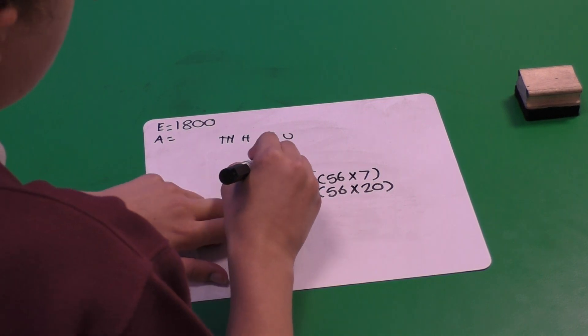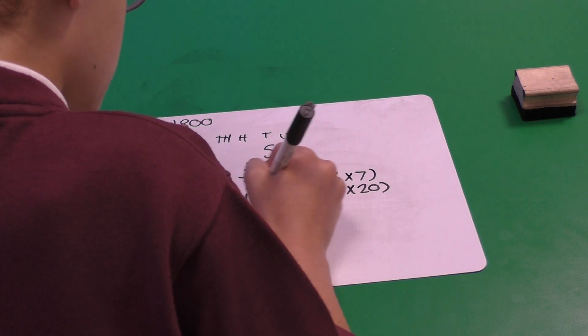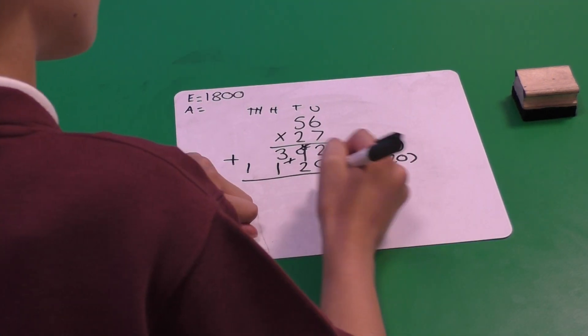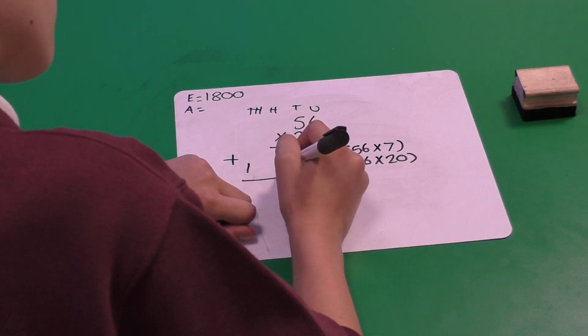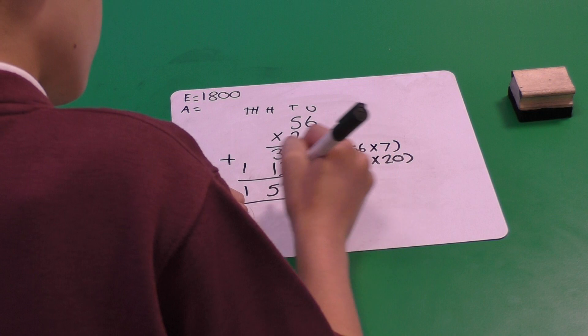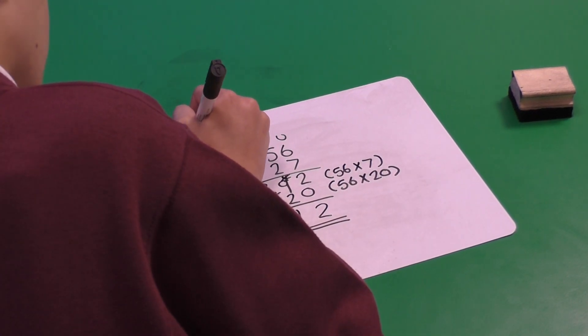And finally, we have 50 multiplied by 20, 1,000 plus the 100 that equals 1,120 and now we're going to add it up. So our answer is 1,512.